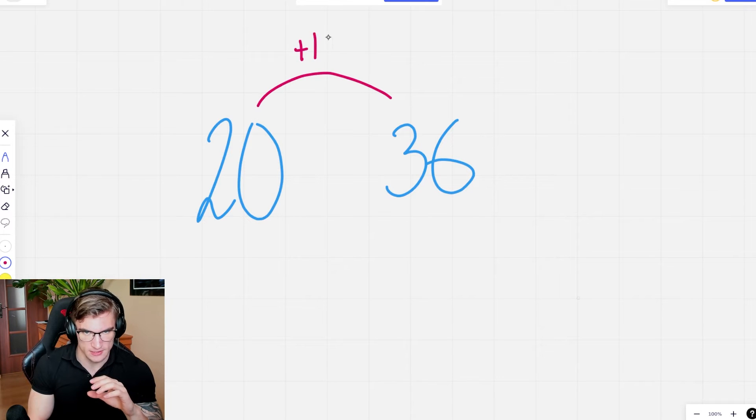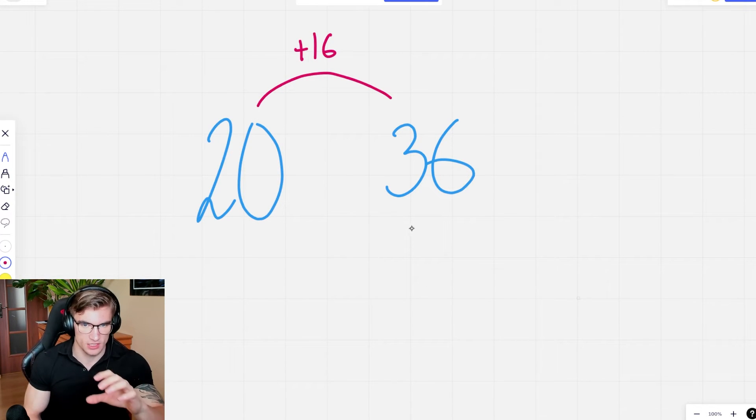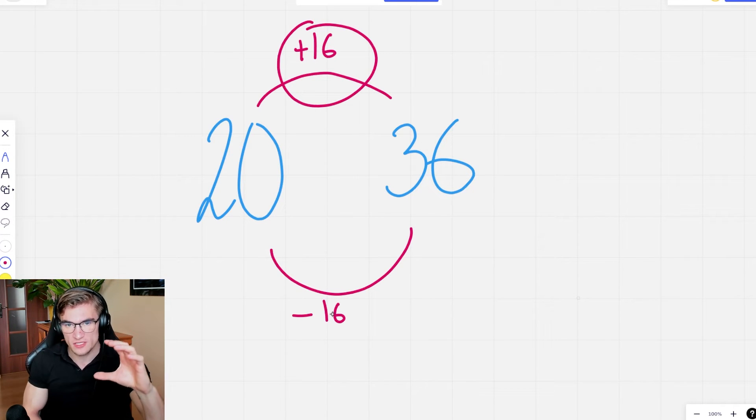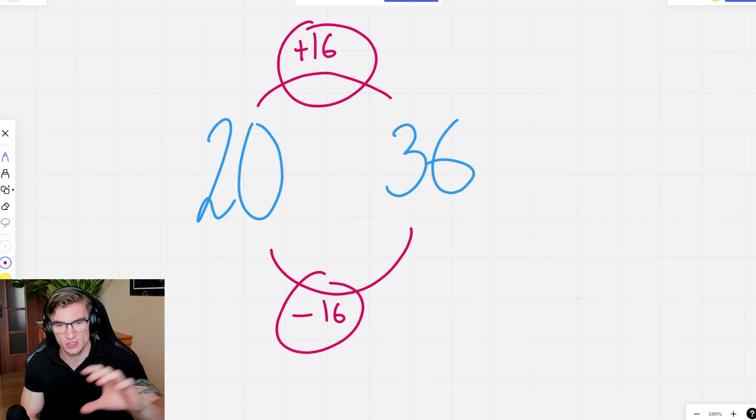I have to add 16, but to go from 36 to 20 I have to take away 16. So what I want you to notice is that the difference is always the same, but if I want to go from the bigger to the smaller one, then the difference is just going to be negative.